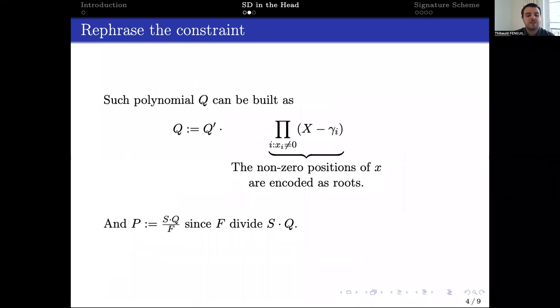In practice, such polynomial Q can be easily built from the tested vector. We simply need to take a monic polynomial of degree W, such that the non-zero positions of the tested vector are encoded as roots.